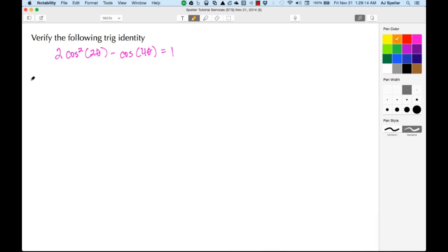Welcome back to STS. In today's video, we're going to verify the following trig identity. Here we have 2 cos²(2θ) - cos(4θ) = 1.